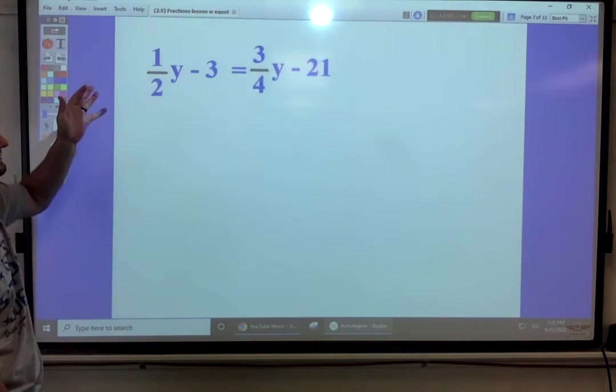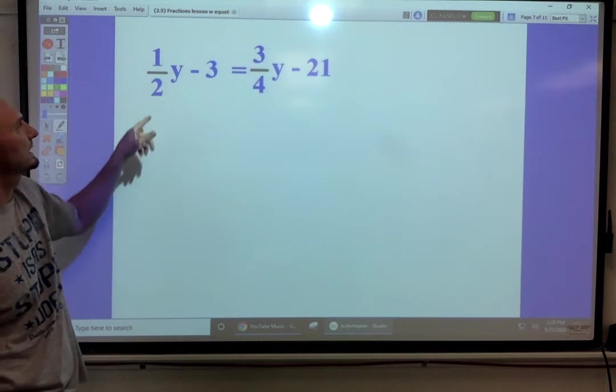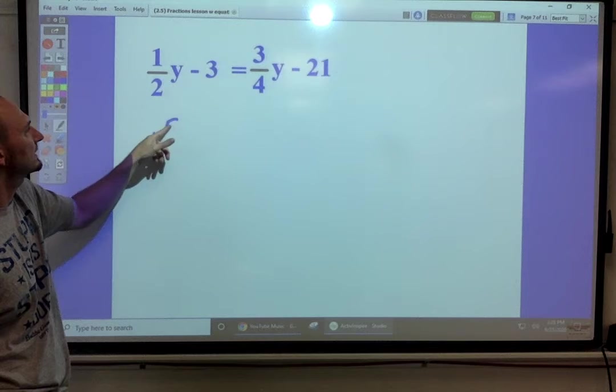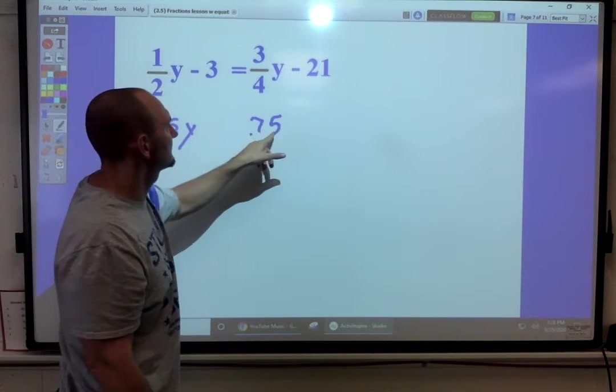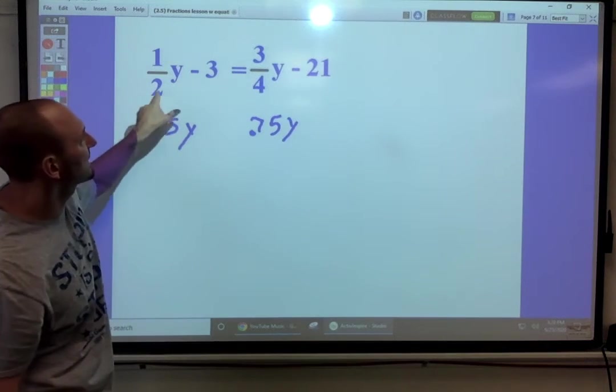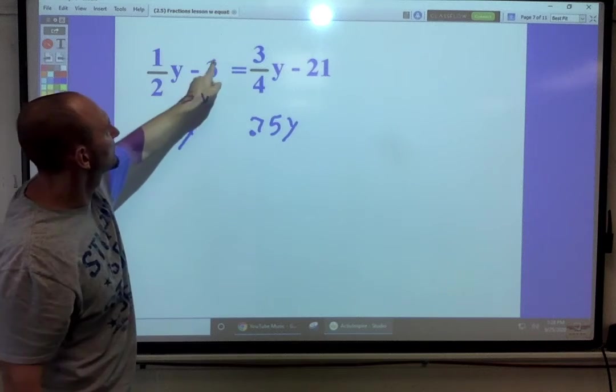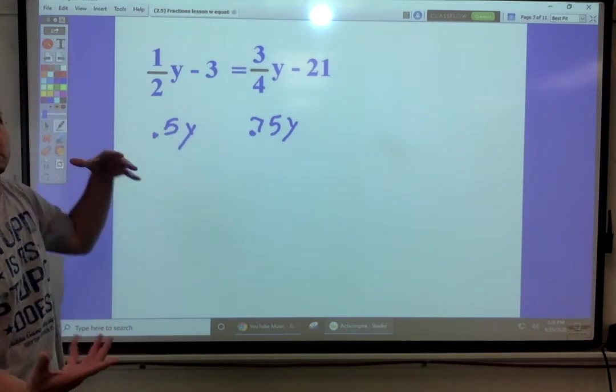Practice it again if you want to. These are terminating decimals. That's a one-half. That can be thought of as 0.5y. 0.75y. We'd rather do decimals, or we can times everything by 4. Each thing gets times by 4. And then your fractions are gone.